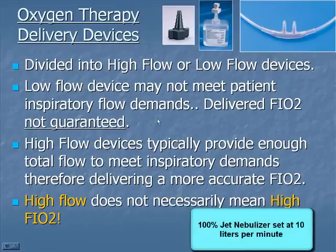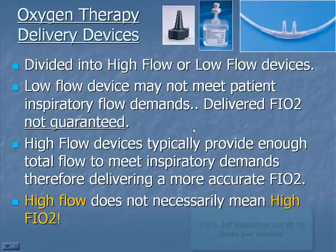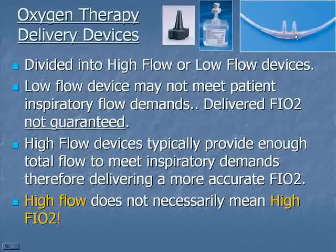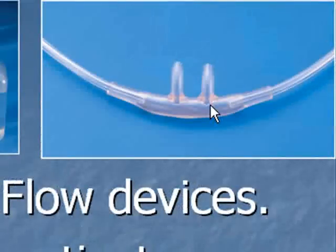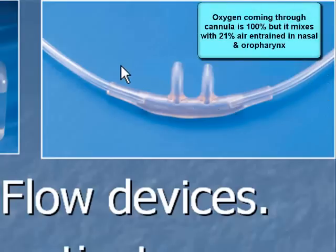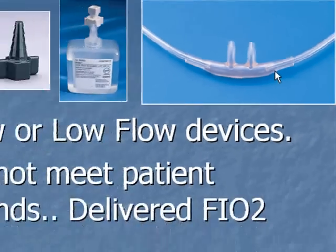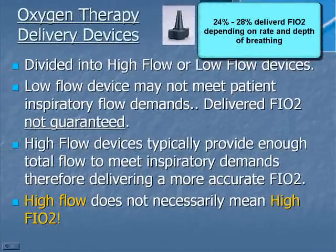For example, a 100% jet nebulizer running at 10 liters — at 100% there is no entrainment, so the total flow to the patient is only 10 liters. If a person is breathing 30 to 40 liters per minute, they're going to be entraining room air through the mask, decreasing the delivered FiO2. That's why the nasal cannula typically delivers lower FiO2s. On a two-liter nasal cannula, the oxygen coming through is 100%, but there's considerable entrainment — 21% room air mixing with 100% oxygen at only two liters. If you mix two liters of oxygen with 35 liters of room air, the FiO2 would be only around 28%.